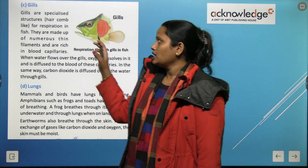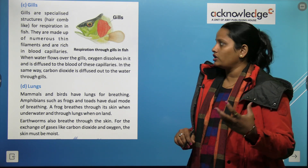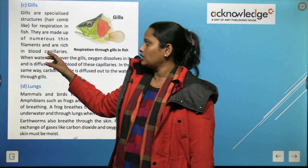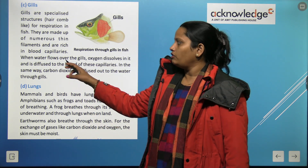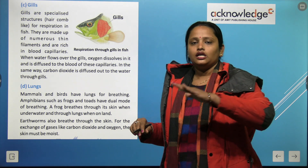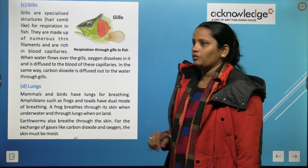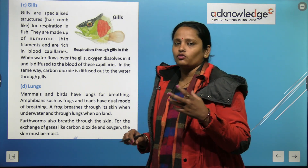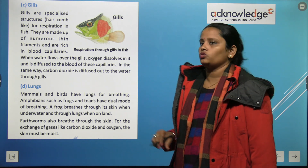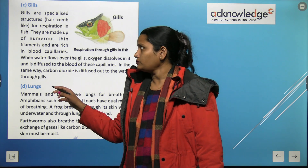Gills are specialized comb-like structures used for respiration in fish. They are made up of numerous thin filaments and are rich in blood. When water flows over the gills, the dissolved oxygen diffuses through the blood capillaries into the body. In the same way, carbon dioxide is diffused out into the water through the gills.